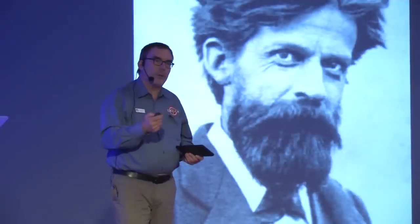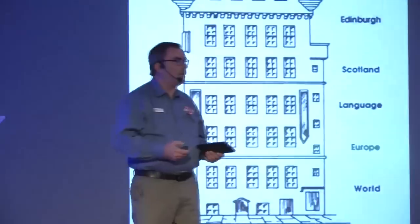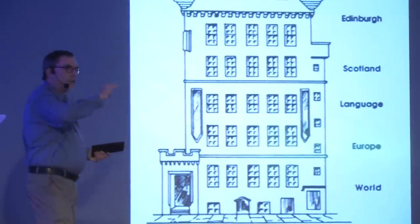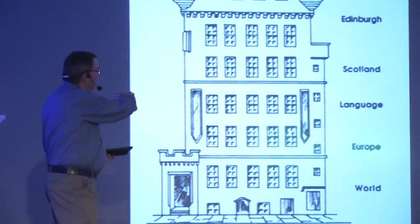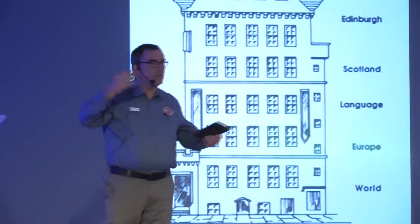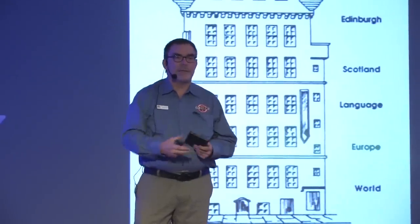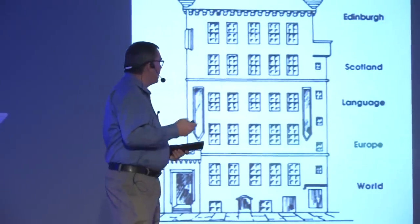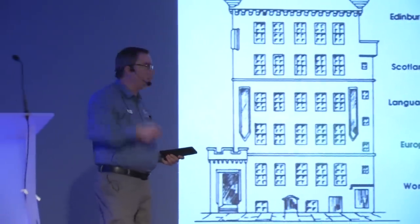He created this museum where he wanted people to learn what it was like to think about their city. The museum had a camera obscura on top, above the building, and each floor had a different set of topics. The idea was that all of this was integrated together, and it would affect his audience using this museum. What I'd like to do is have my own sort of mini Outlook Tower, and start at the top and work downward.